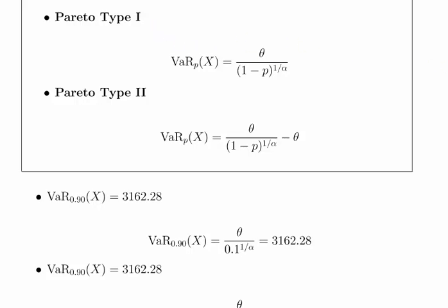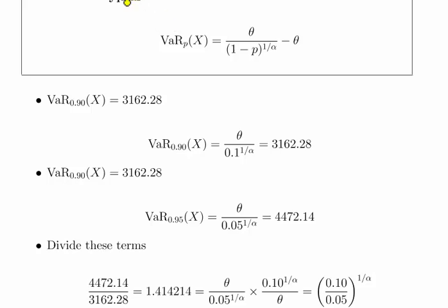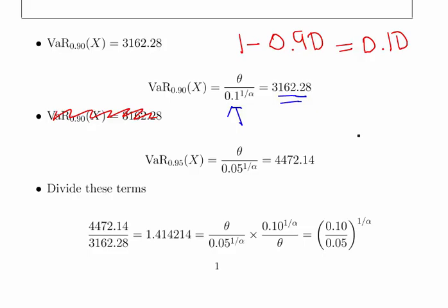So what we're going to do is set these out to show the pieces of information that we are given. Value at risk here, the 90th percentile and 95th percentile. So 1 minus 0.90 gives us 0.10, which is what we have here. Theta divided by 0.1 to the power of 1 over alpha is 3162.28.